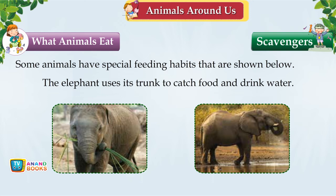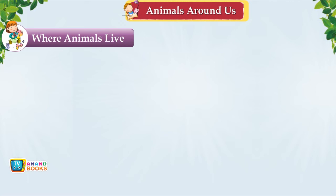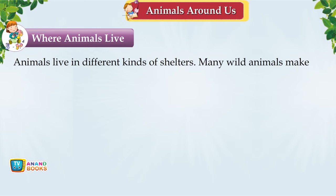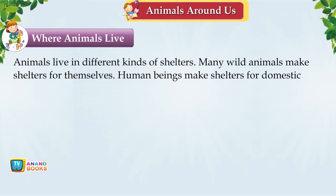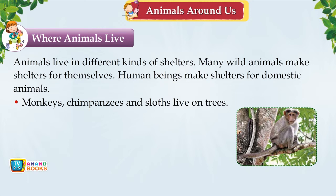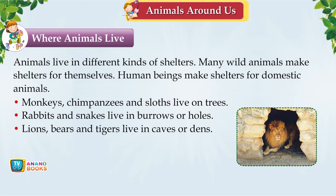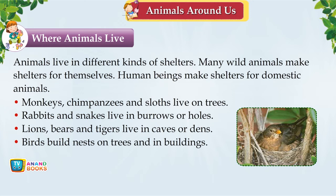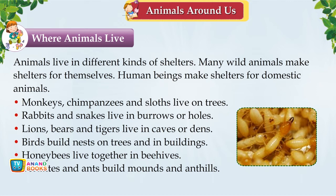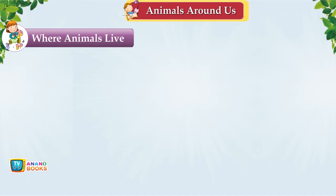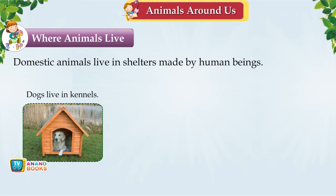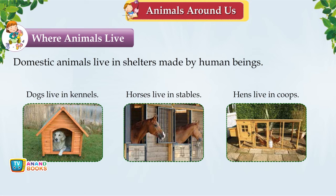Where Animals Live. Animals live in different shelters — many wild animals make their own while humans make shelters for domestic animals. Monkeys, chimpanzees and sloths live on trees. Rabbits and snakes live in burrows or holes. Lions, bears and tigers live in caves or dens. Birds build nests on trees and in buildings. Honeybees live in beehives. Termites and ants build mounds and anthills. Dogs live in kennels; horses in stables; hens in coops; cows in sheds; sheep in folds; fish are kept in aquariums.